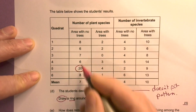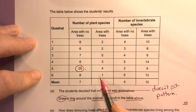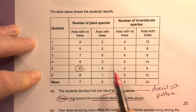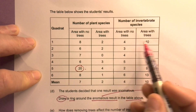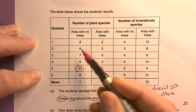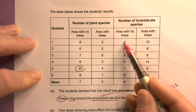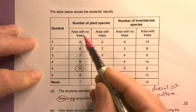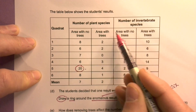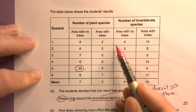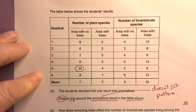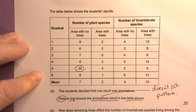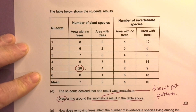So that's looking down the columns. We can't look across the rows because we're looking at different things each time, so it's not fair to go across horizontally.